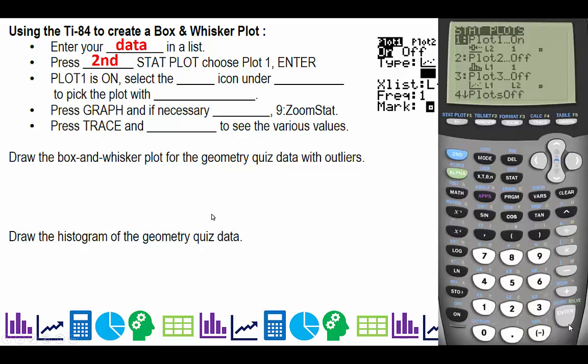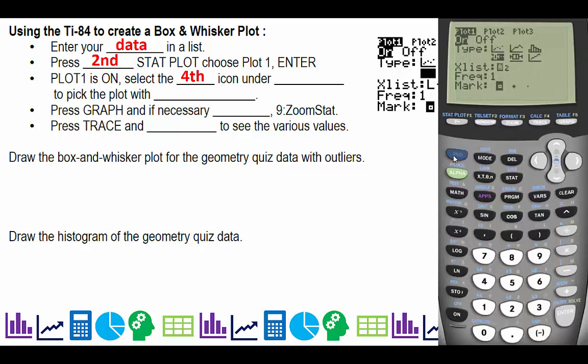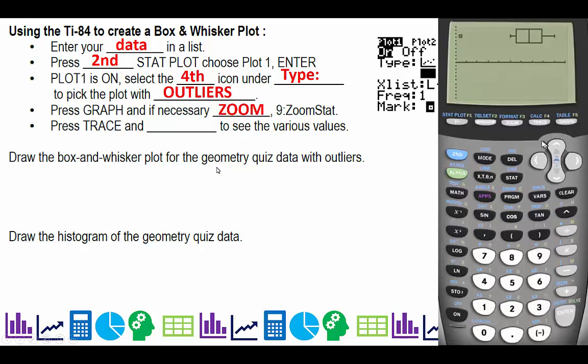So press second stat plot, and then press enter, make sure plot one is turned on, select the fourth icon under type, pick the plot without layers right there, and press graph as necessary and zoom in nine, and trace an arrow to see the various values.